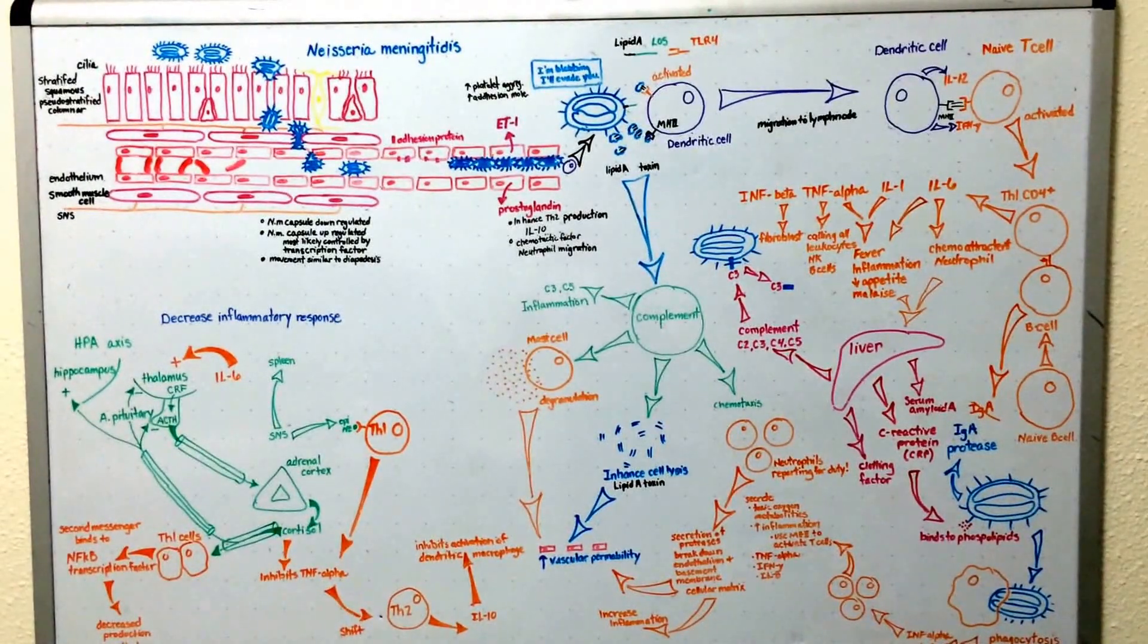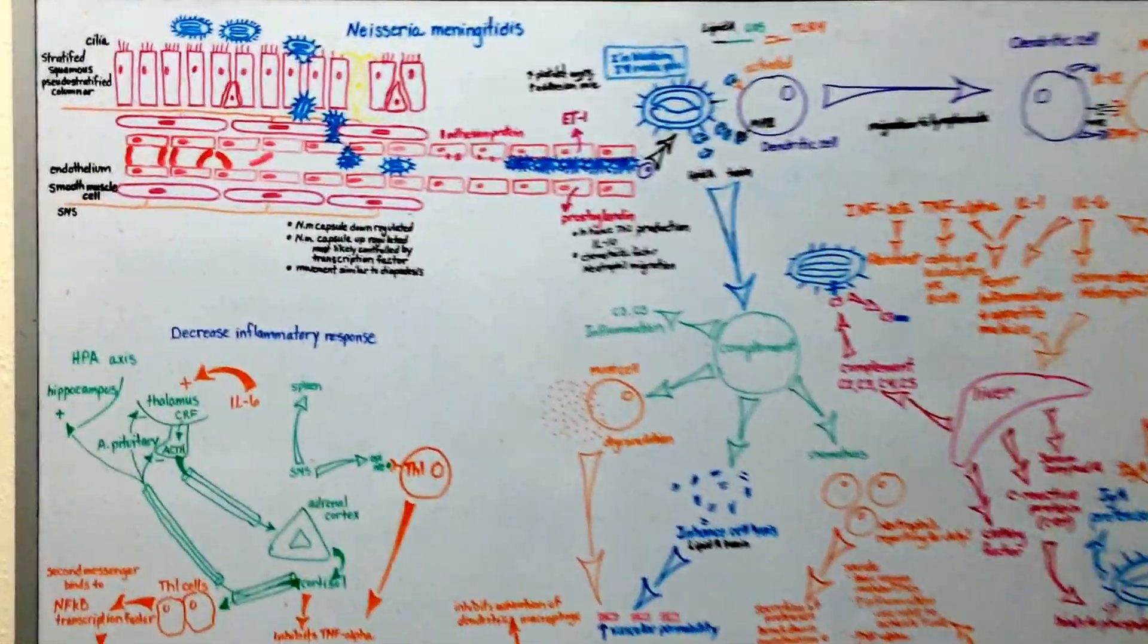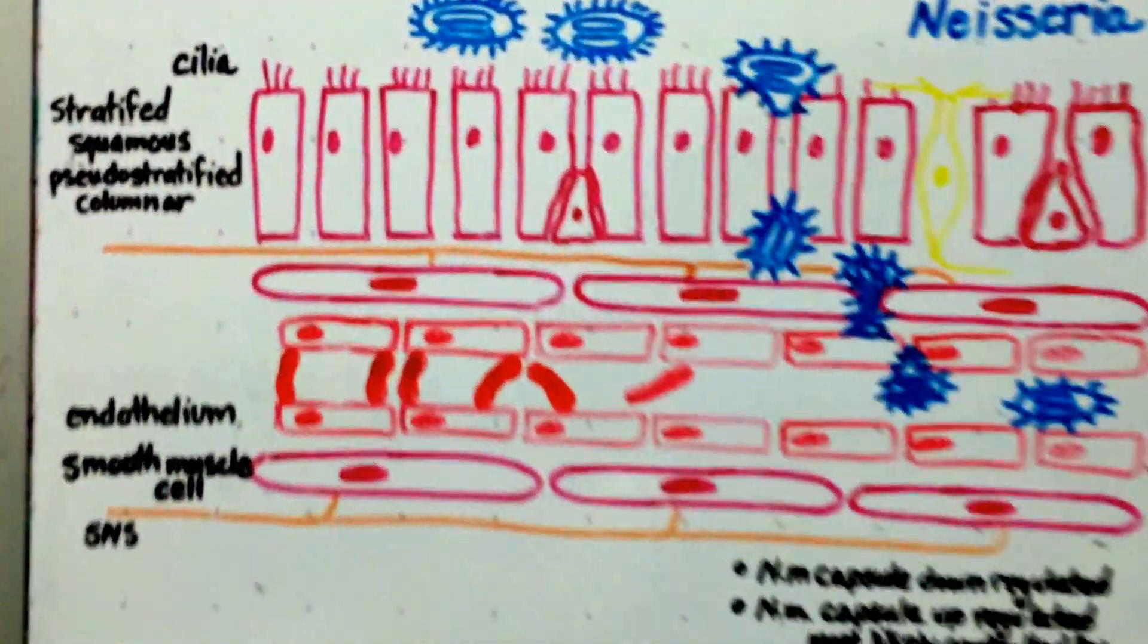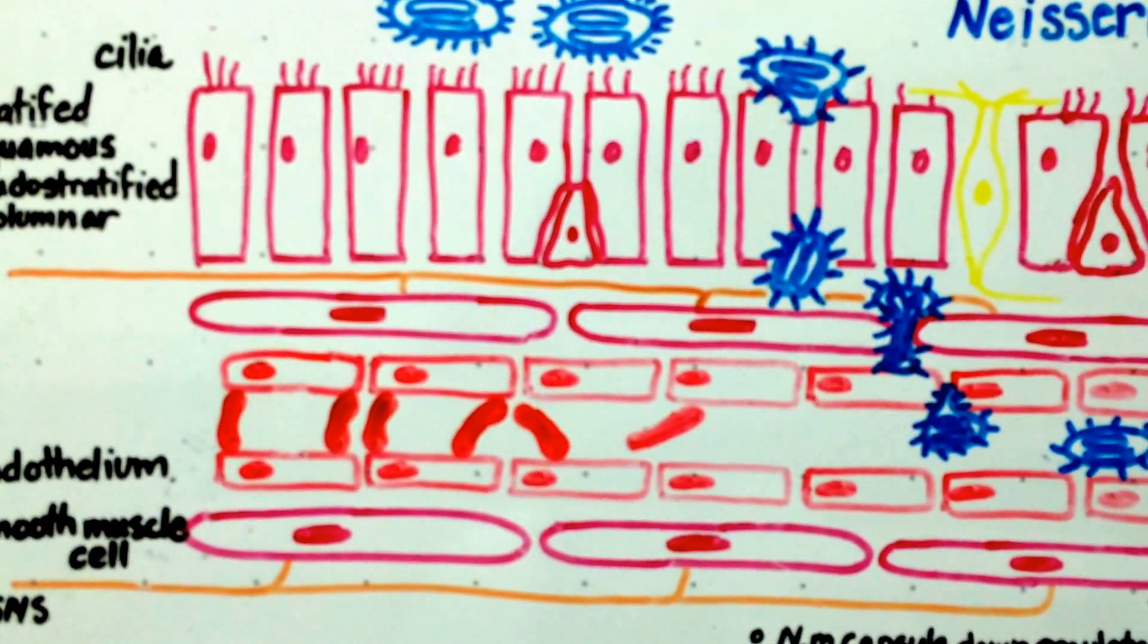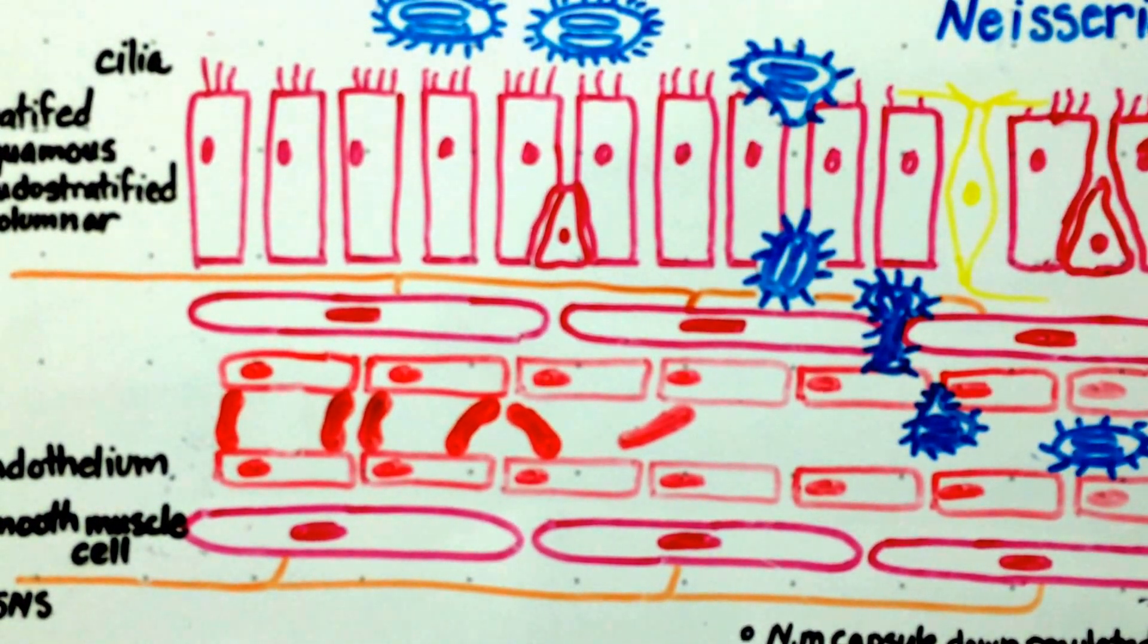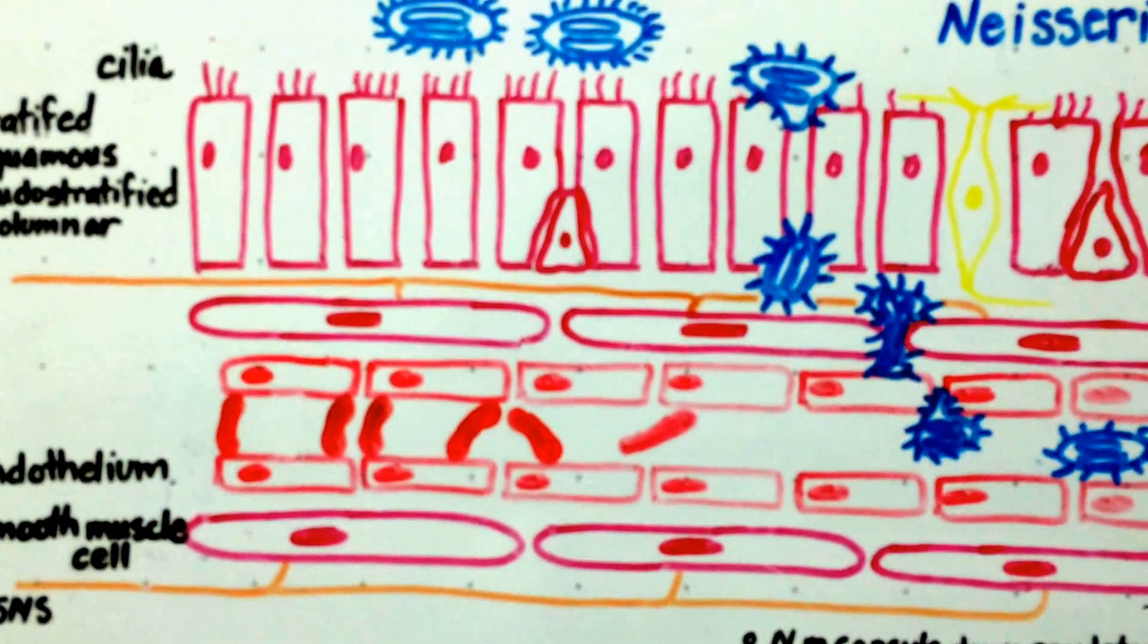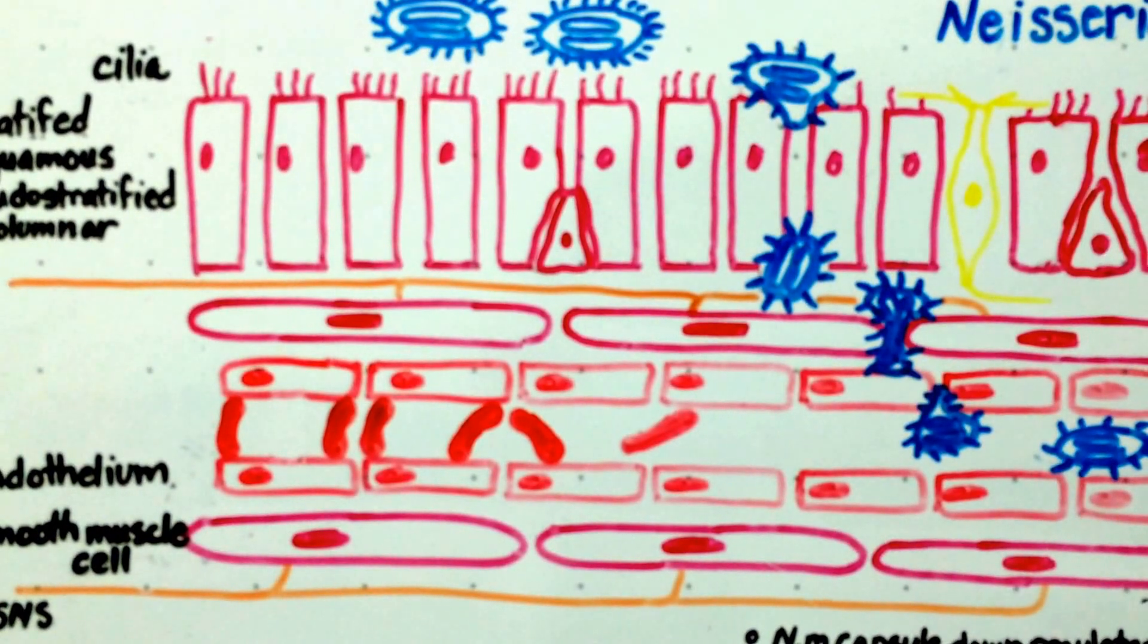The pathophysiology of meningococcemia. Let's move into the host nasal pharynx. Here you'll see the bacterium has found a place, Neisseria meningitidis, where the cilia on the host epithelium cells is not intact.